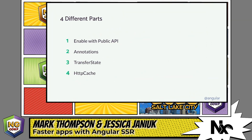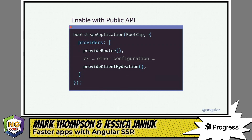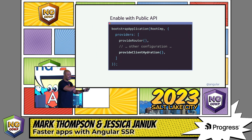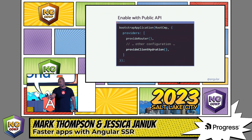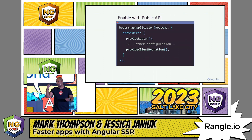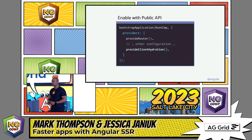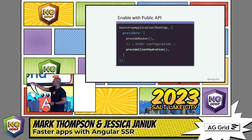This API is going to be a part of your story because it's a one-line change. If you already have your applications using server-side rendering, this works out of the box. I can hear some of you saying, but Mark, what about a standalone example? What about my modules? It's the same thing for your modules as well — just add this to your providers and you get to use all of this great new hydration work. But there are more steps — what happens next, Jessica?